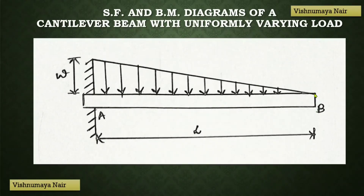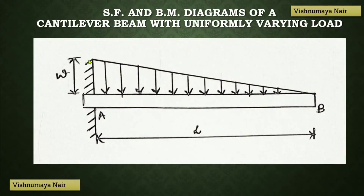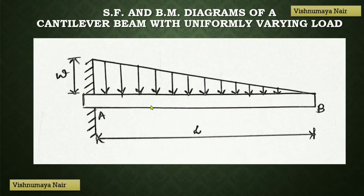Here at this end, we have load equal to zero, and at this end the load is equal to W. That is, load is zero at one end and it increases uniformly to the other end. Such a load is known as a uniformly varying load or a triangular load. I have explained the different types of beams and the types of loadings in one of the videos on shear force and bending moment diagrams, so I will provide the link in the description. Watch that video in order to have a clear understanding of the types of beams and the types of loadings.